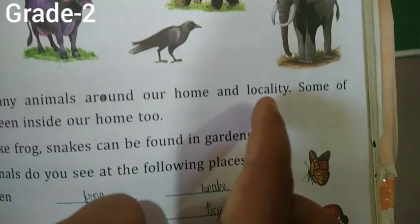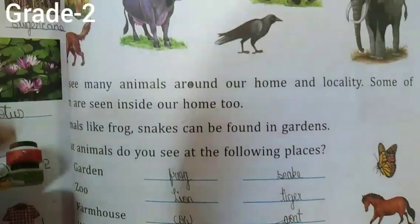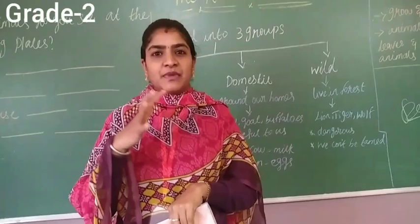We see many animals around our home and locality. Some of them are seen inside our home too. Animals like frog and snake can be found in the gardens. Animals may be very big or huge, or maybe a small animal.